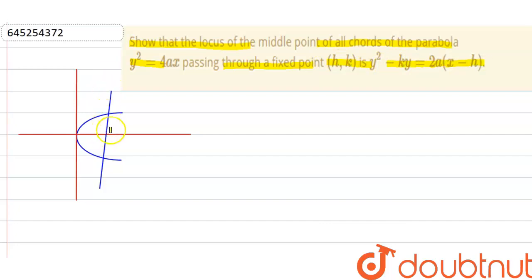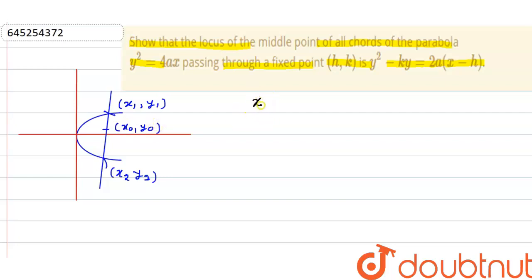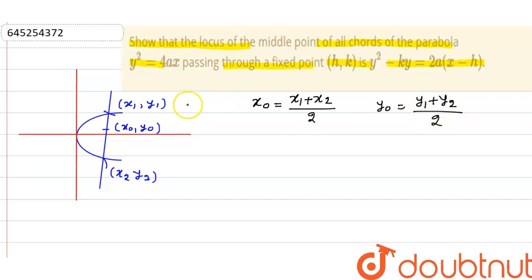Let's say we have a parabola and we have a chord. Let's say one endpoint of the chord is (x1, y1) and the other endpoint is (x2, y2). The middle point of the chord is (x0, y0). So we can write x0 = (x1 + x2) / 2 and y0 = (y1 + y2) / 2.